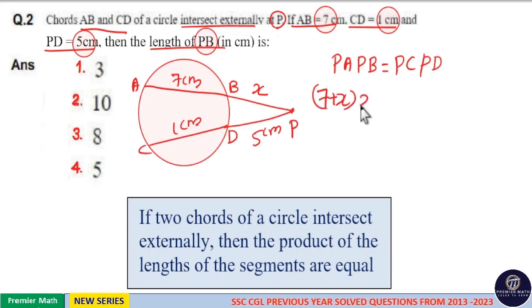PB means X. So, 7 plus X into X is equal to PC equal to 5 plus 1, which is 6. PD equal to 5. So, 6 into 5 is 30.